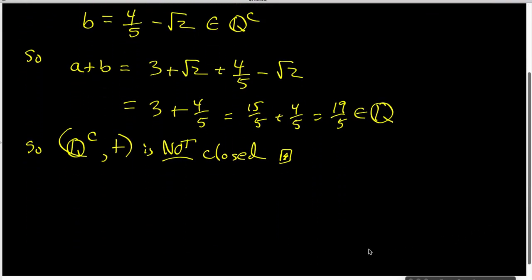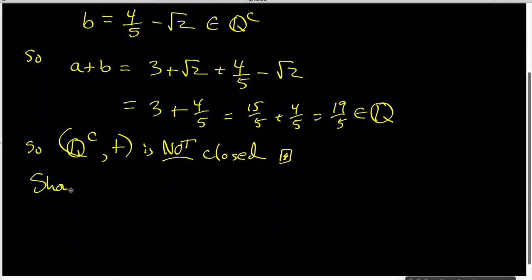It's worth noting that you show that the set of irrationals under multiplication is not closed. You do this in the same way. You find a product, you find two irrational numbers that when you multiply them together, the result turns out to be a rational number.